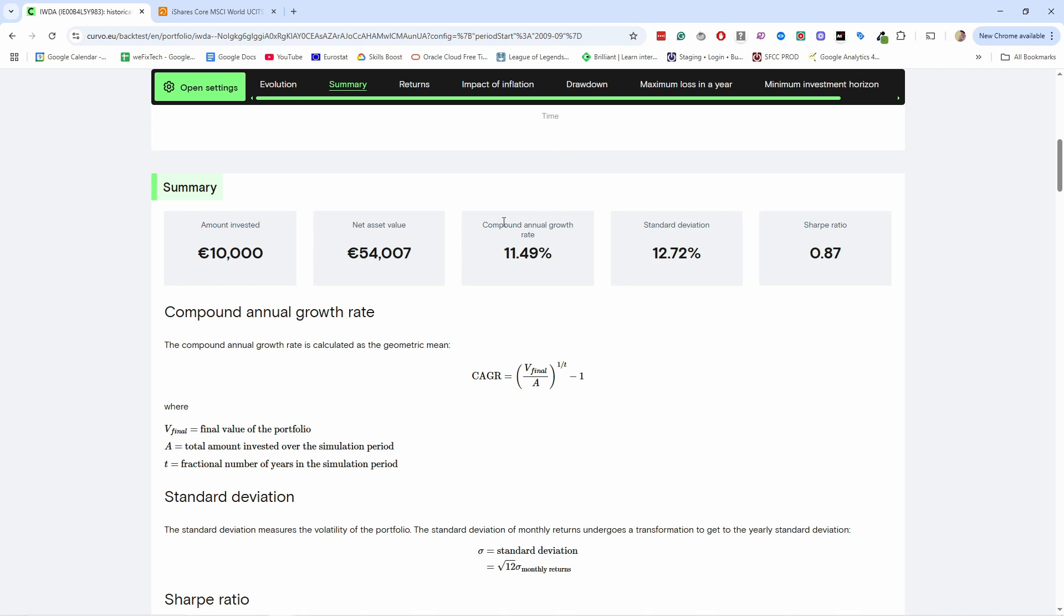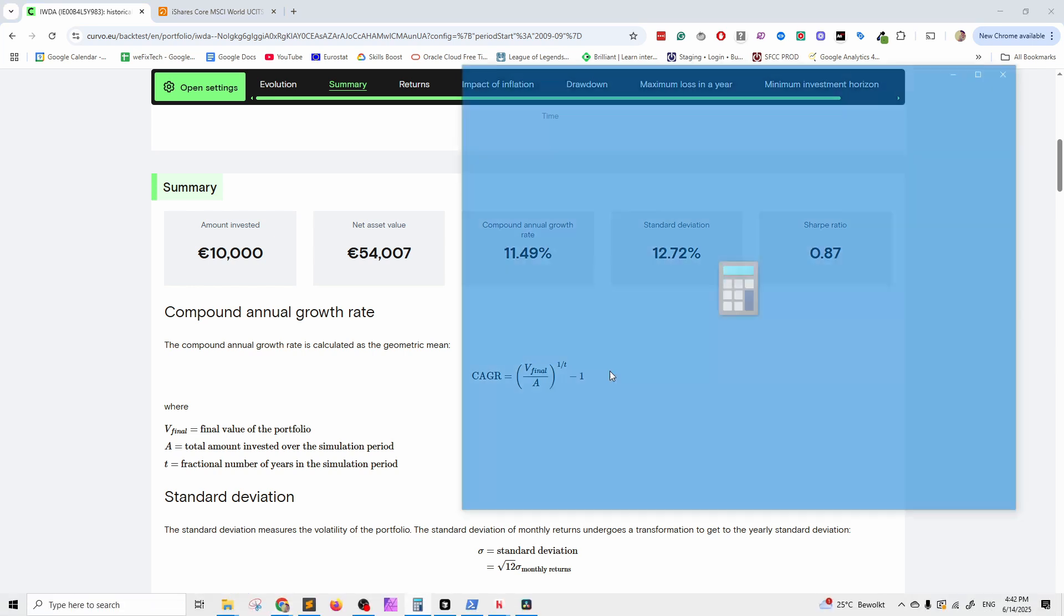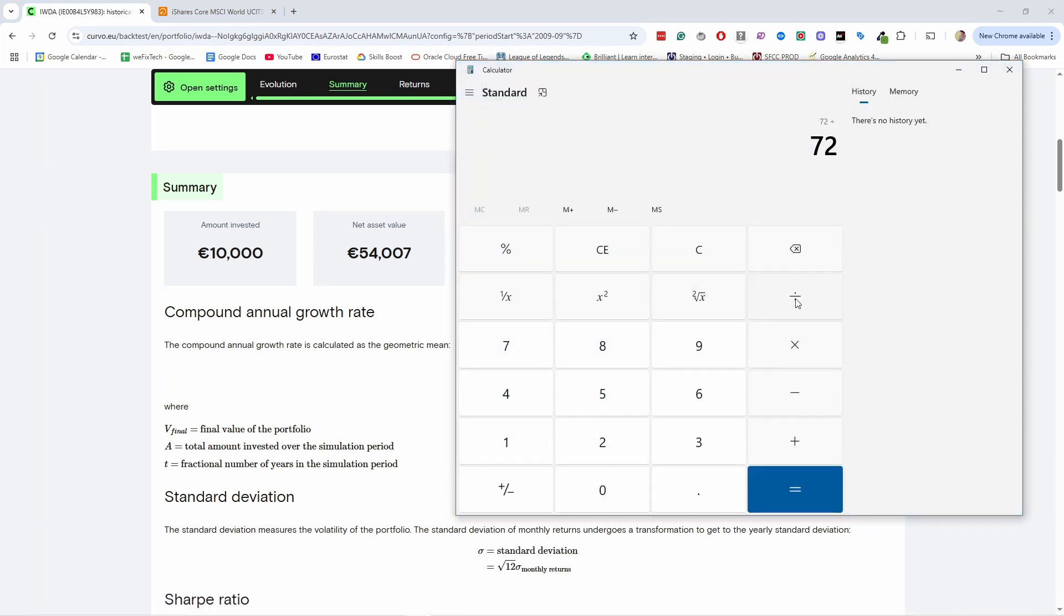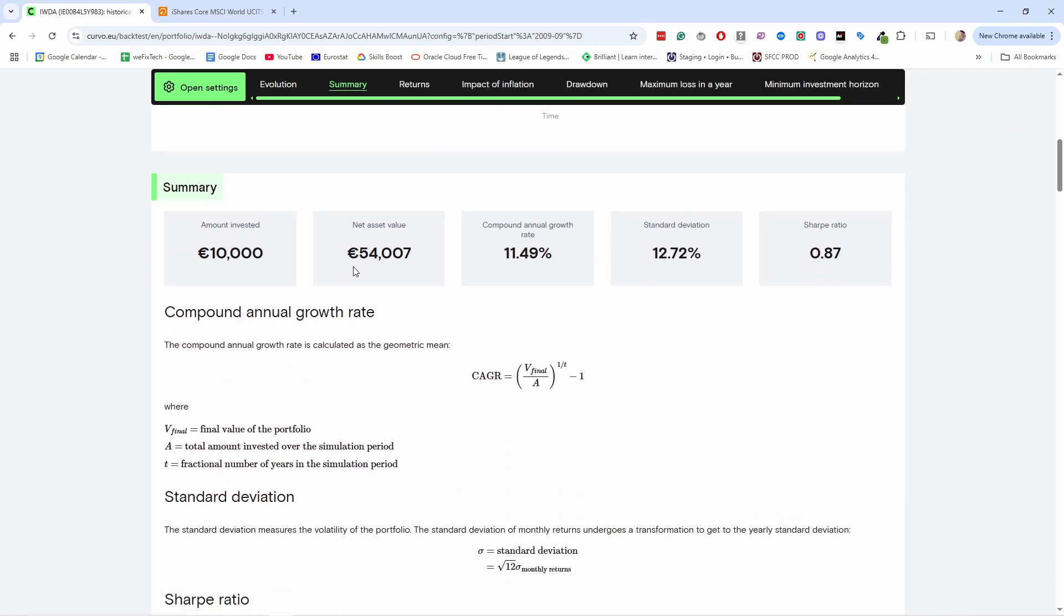But basically what you need to do now is grab a calculator and you say 72 divided by 11.5. So it takes 6.2 years for this ETF to double if you don't add anything to it. So you invest $10,000—in 6.2 years you're gonna have $20,000.